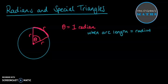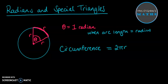So that angle is created when the arc length is equal to the radius—we get a measure of one radian. Now, a circumference is equal to 2πr. So that means our radius fits into the circumference 2π times.